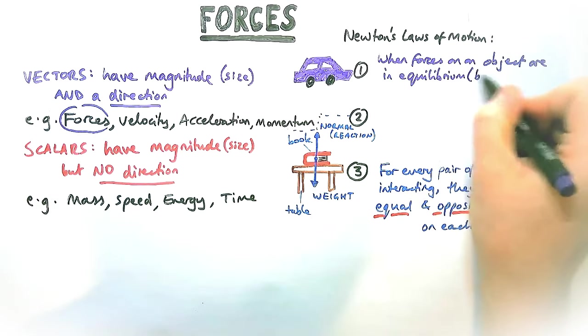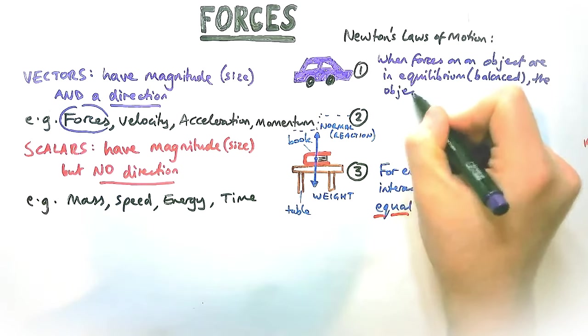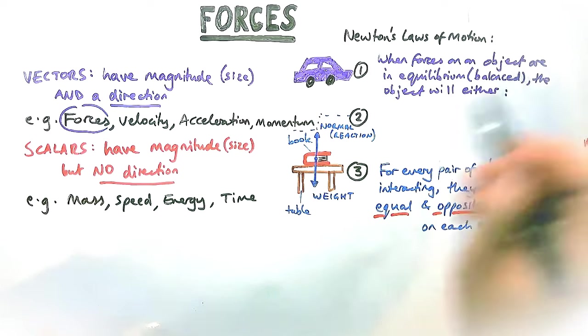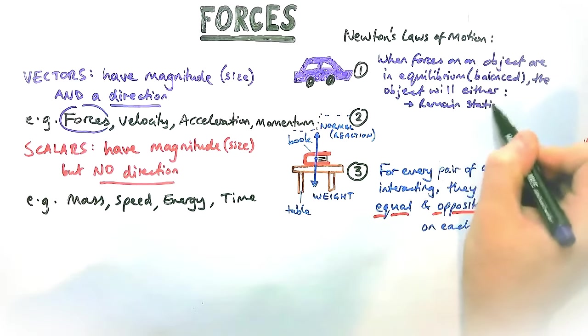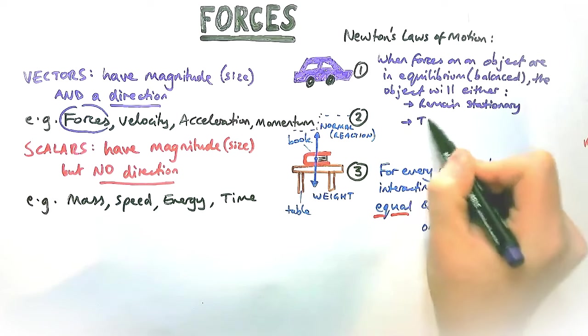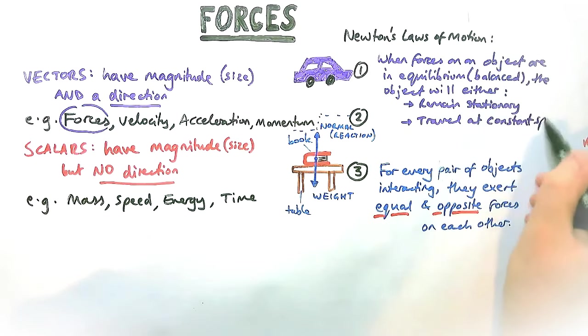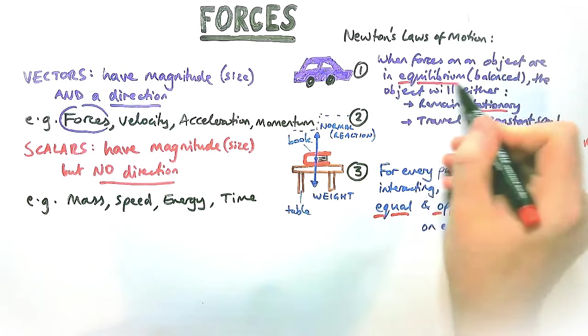When forces on an object are in equilibrium, that means balanced, the fancy word for balanced, the object will either do two things. It'll either be at rest or stationary, just like the book, so it'll remain stationary, or it will travel at a constant speed. That constant speed is really important because people forget about that. They'll think it's stationary. It's not always stationary.